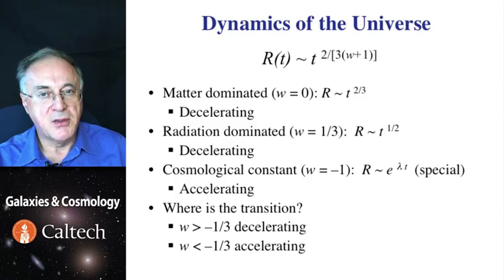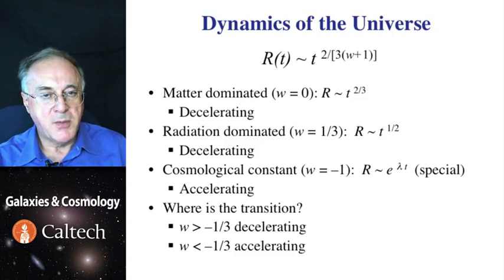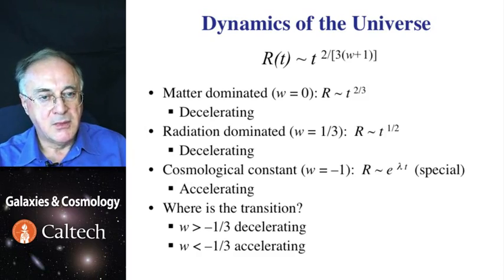Since that power is less than one, the universe is decelerating, it's slowing down its expansion. This was intuitively obvious, because the gravity of the matter pulls everything back, just as if you were to throw an object up in the air, it will reach certain maximum height while decelerating all the way there, and then, of course, it'll turn and fall down.